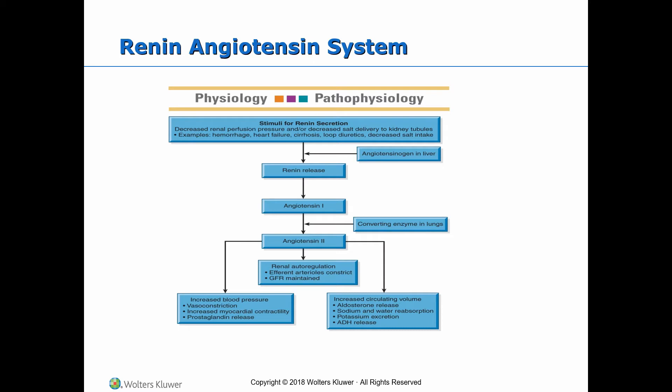When renal perfusion is decreased due to hemorrhage or heart failure, the liver secretes angiotensinogen, which results in release of renin. Renin converts angiotensinogen into angiotensin-1. In the presence of coenzymes from the lungs, angiotensin-1 is converted to angiotensin-2. In the presence of angiotensin-2, aldosterone is released from the adrenal glands, resulting in vasoconstriction, increased sodium and water reabsorption, and potassium excretion. Angiotensin also causes vasoconstriction, increased myocardial activity, and prostaglandin release, resulting in increased blood pressure. With sodium and water reabsorption, urine output decreases. Prolonged RAS can result in acute kidney injury.